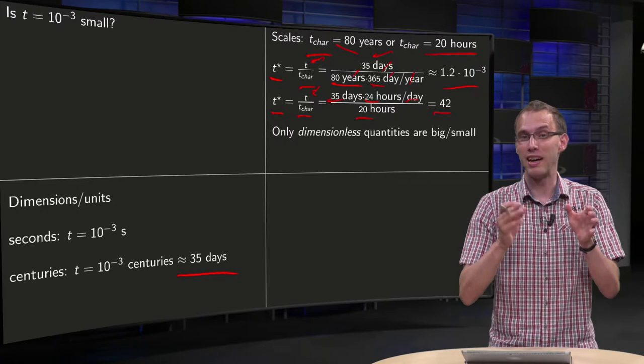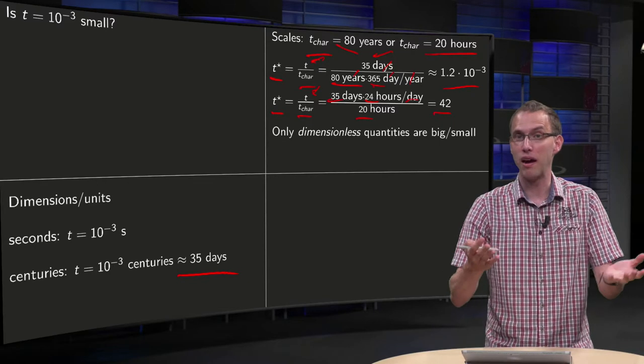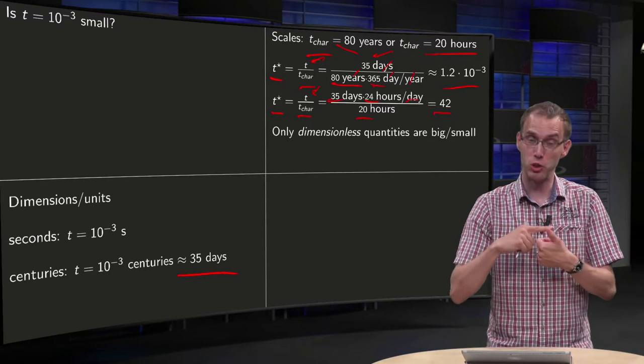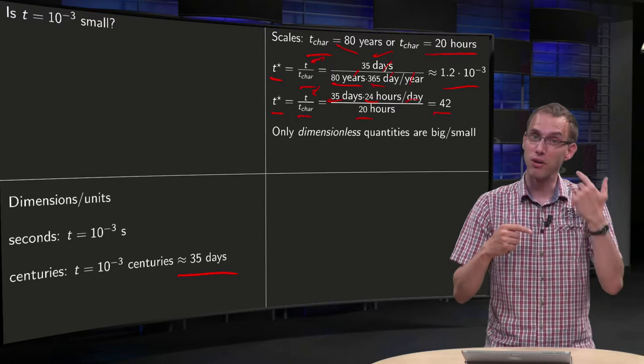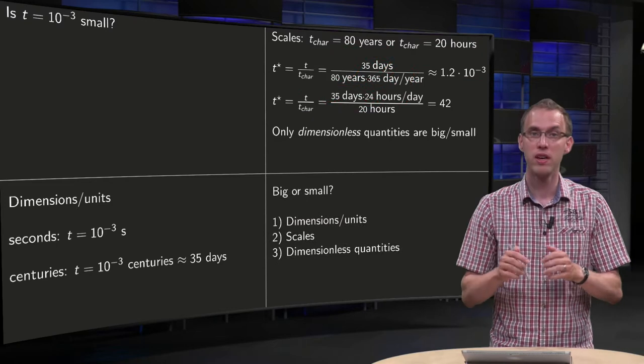So you see, is my t equals 10 minus 3 small? Well it depends. First of all you have to know with respect to which unit you are talking, and then you have to look at what characteristic scale you are looking.